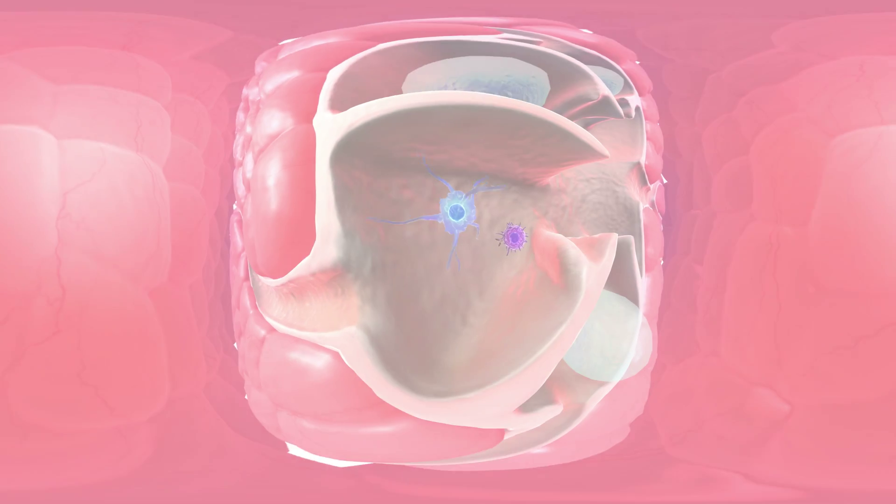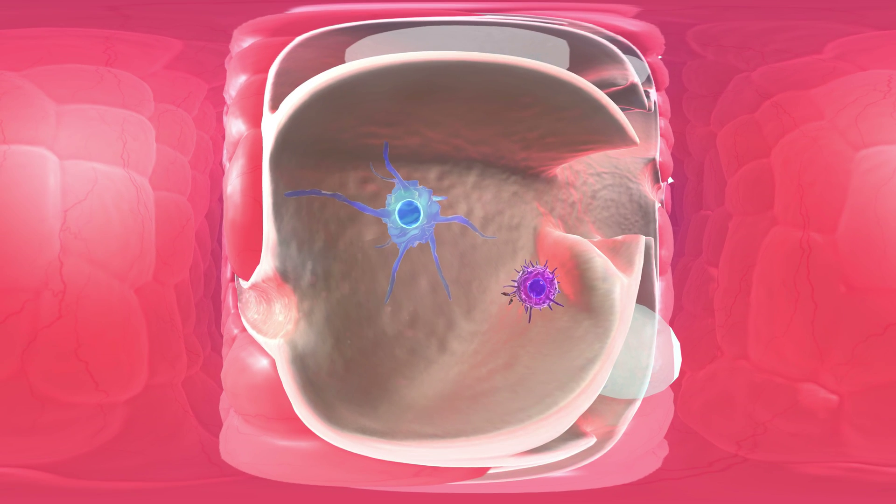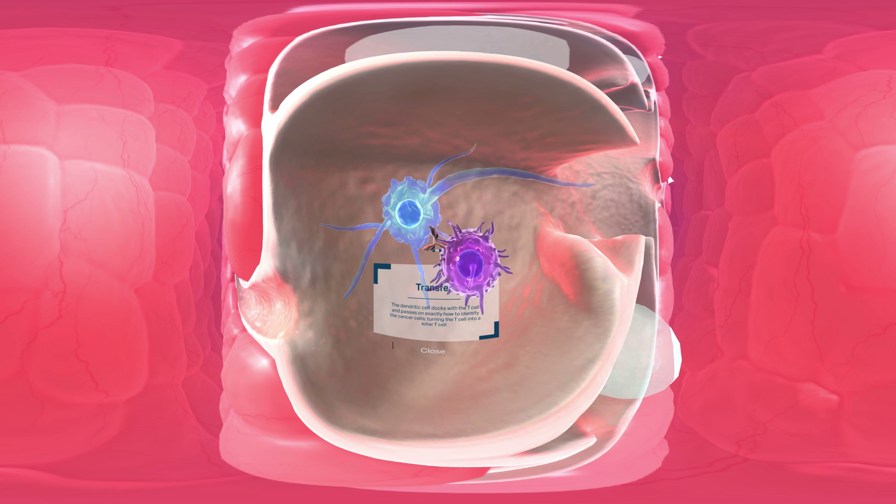These activated dendritic cells are returned to the body as a vaccine. Back in the body, they head for the lymph nodes to transfer this new knowledge to another sort of immune cell, T cells.